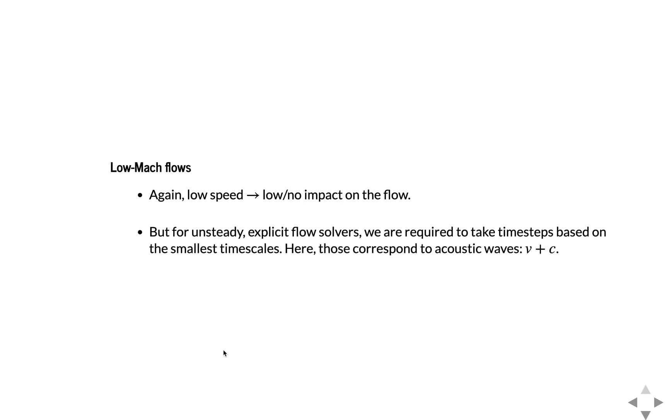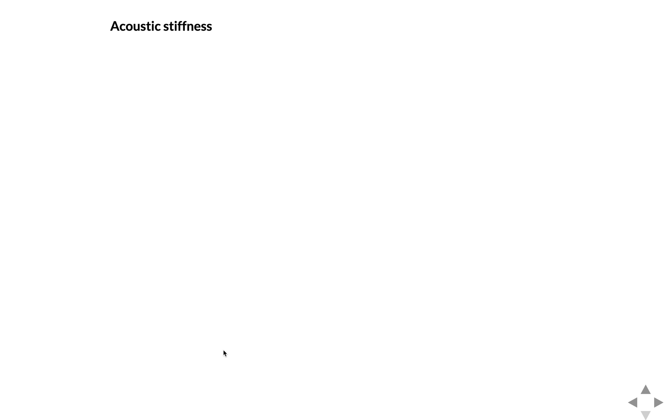So again, for low Mach flows, low speed flows have little or no impact on the thermodynamics of the flow. But if you're solving the problem with an unsteady explicit flow solver, which is common, then we're required to take time steps that are based on the smallest time scales. Here, those correspond to acoustic waves, so c being the sound speed velocity, and that will normally be overlaid on the flow velocity. So this causes significant acoustic stiffness, and we say that a problem is numerically stiff if we have to take time steps for stability that are much smaller than we need for accuracy.